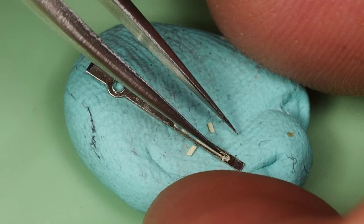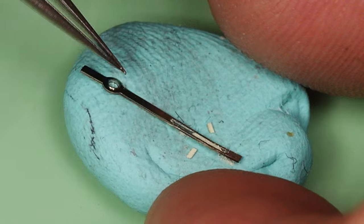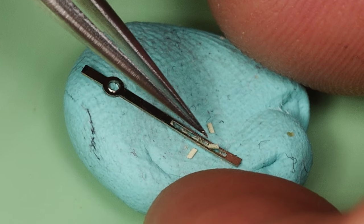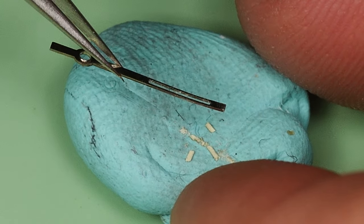For this watch, I've decided that I'll re-lume the hands. First, I'll scrape out the existing material, since it's old, it's brittle, and flakes off easily.